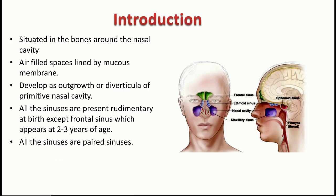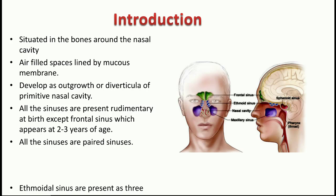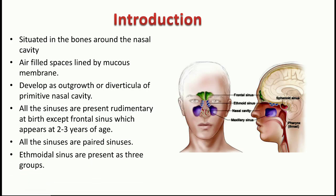All the sinuses are actually paired. We have a pair of frontal sinuses, maxillary sinuses, sphenoidal air sinuses, and ethmoidal sinuses on either side. With respect to the ethmoidal sinus alone, it is divided into three groups: anterior, middle, and posterior group of sinuses.